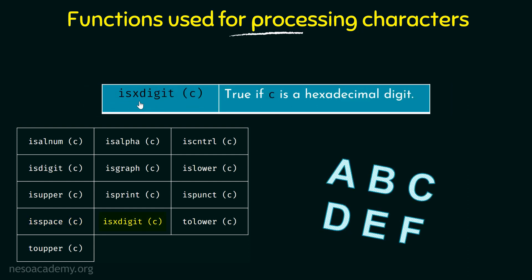Next we have ISXDIGIT, which checks if C is a hexadecimal digit. Hexadecimal numbers go from 0 to 9, and then A for 10, B for 11, and so on through C, D, E, F. We have briefly covered hexadecimal representation in one of the previous lectures. If C is a hexadecimal digit then ISXDIGIT returns true, and false otherwise.